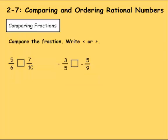First thing is comparing fractions. It asks us to compare the fraction, write either less than or greater than. There also might be some equal to as well. Here we have 5/6, and we have 7/10. The way to figure this out, which one is bigger than the other one, is to find a common denominator. So we have a denominator of 6, and we have a denominator of 10.